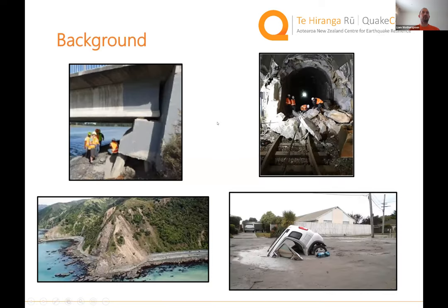To give some background: it's not unsurprising that when we think about our transport system, it's been impacted in multiple different ways and in multiple earthquake sequences. We can see example images here of bridge impacts due to lateral spreading, fault rupture affecting train tunnels, and landsliding along the Kaikoura coast affecting the road network.